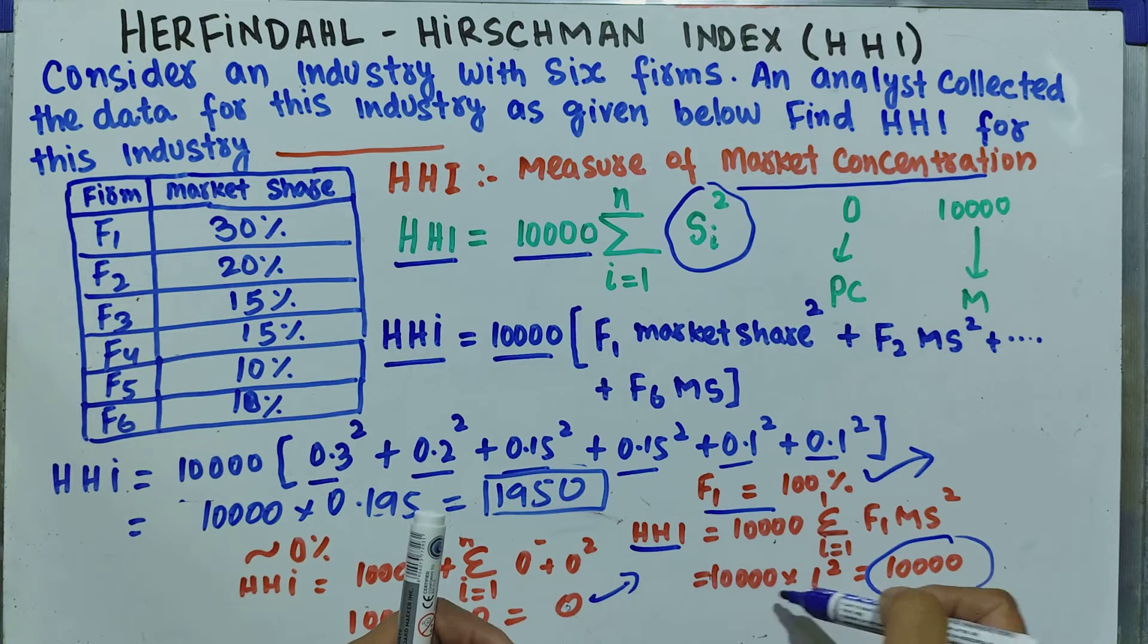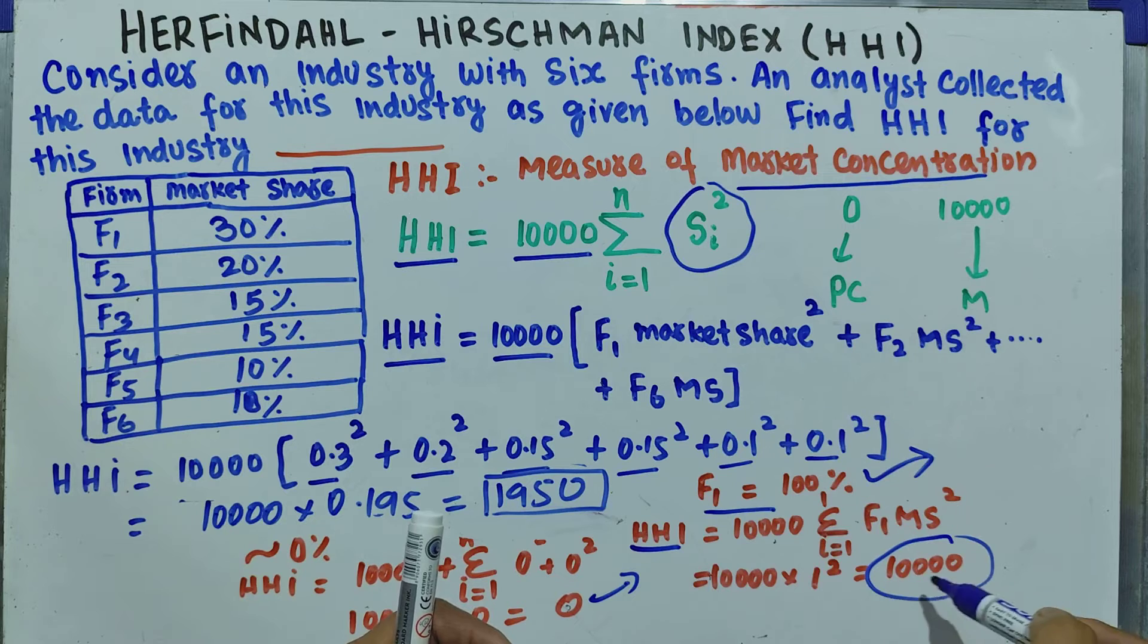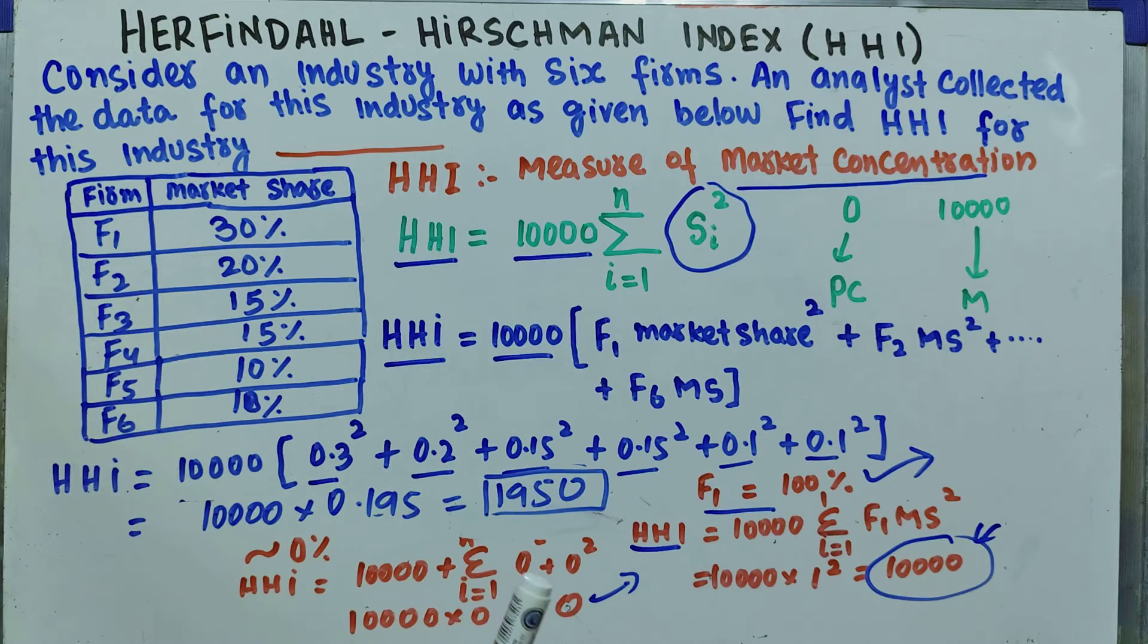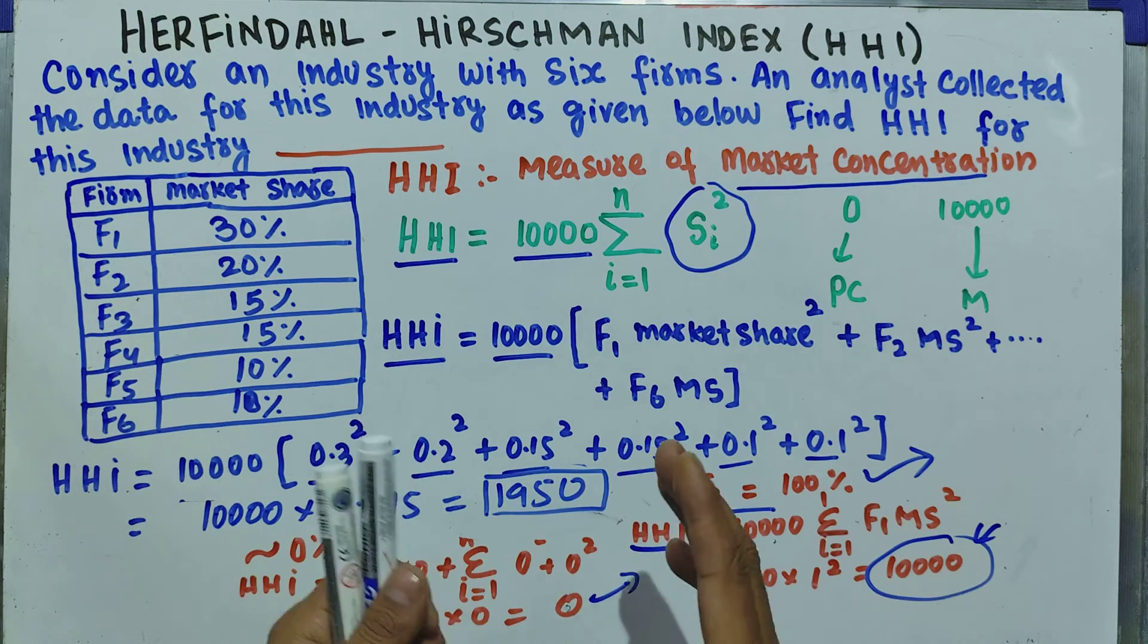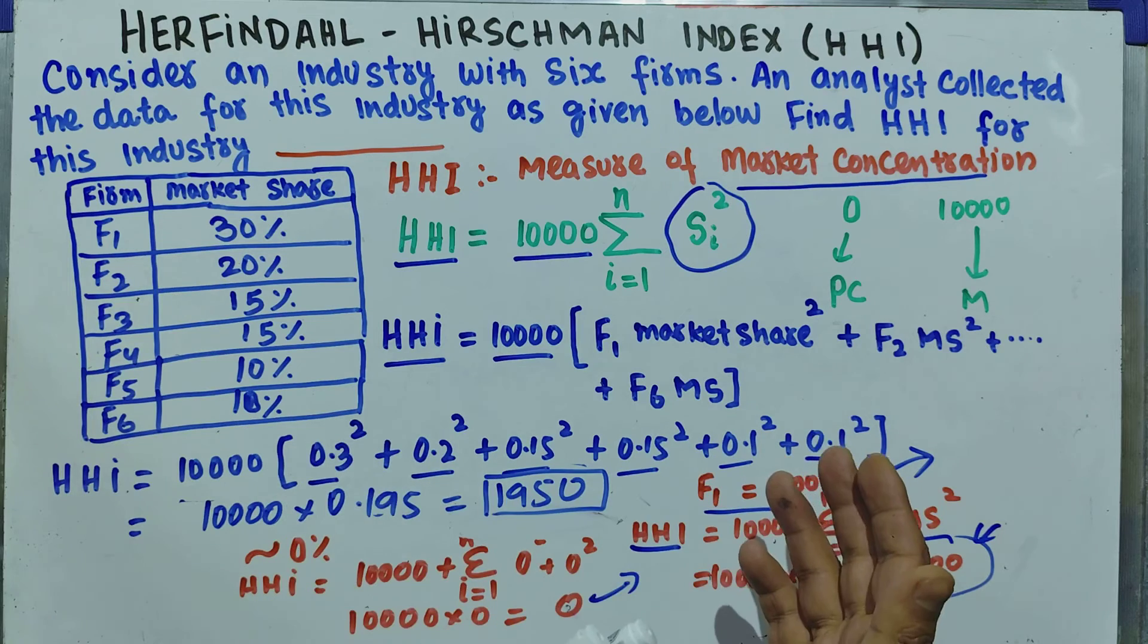The share of this very firm, which is 100%, can be written as 1. So the value of HHI will come out to be 10,000 times 1 squared, which equals 10,000. Its value lies between 0 and 10,000.